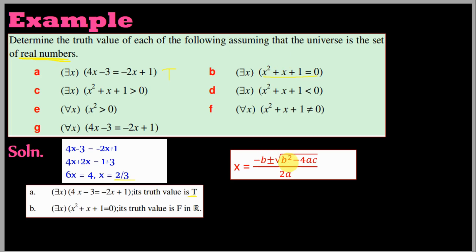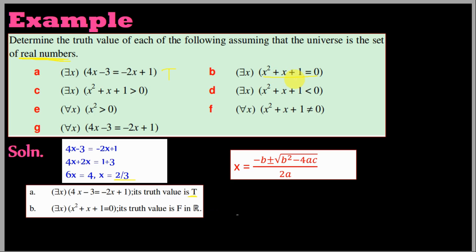To check for real solutions, we use the discriminant formula: b squared minus 4ac. Here the coefficients are a equals 1, b equals 1, c equals 1 minus 1 equals 0... actually checking x² + x + 1 - 1 = 0, that is x² + x = 0. The discriminant b squared minus 4ac gives 1 minus 4 times 1 times 0... evaluating properly, the discriminant is less than 0, so it has no real solution.